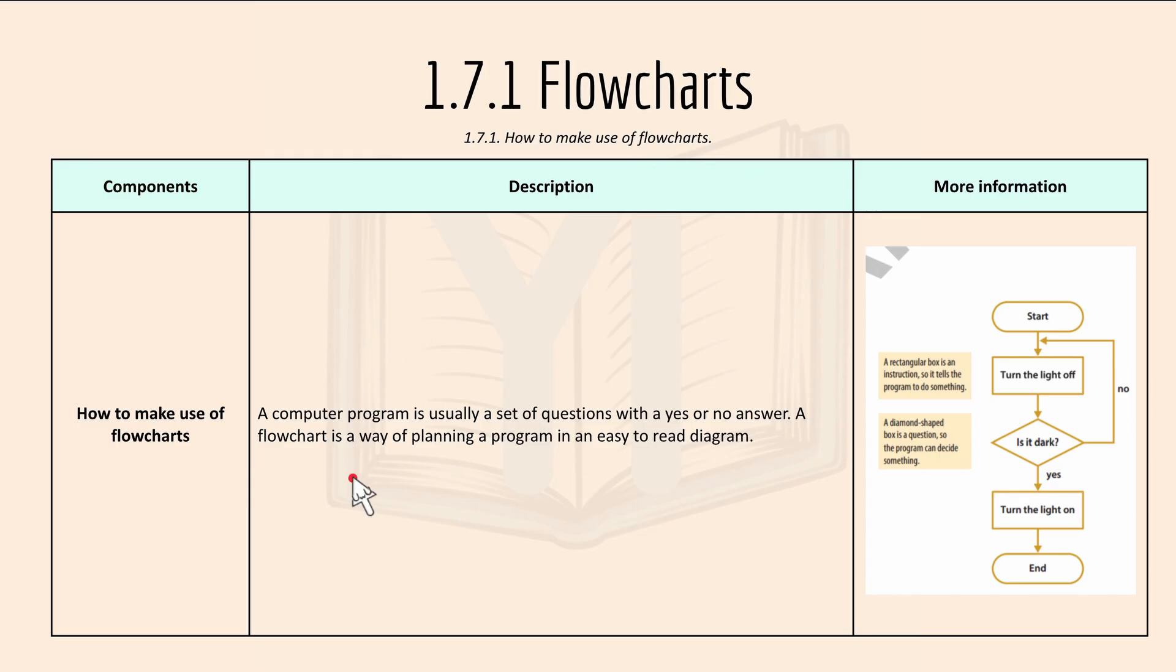And the description: A computer program is usually a set of questions with a yes or no answer. A flowchart is a way of planning a program in an easy to read diagram.